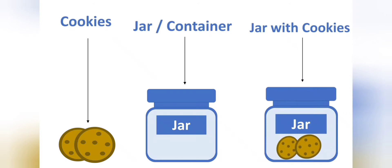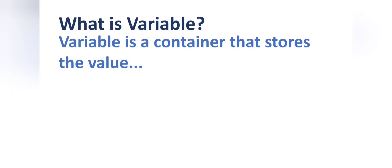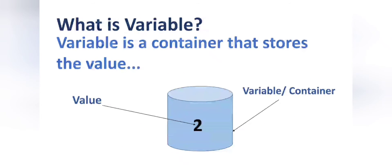Similarly, in Java programming, if we have to store a value or any data, the question arises: where can we store it? We can store a value or any data into a variable. In Java, a variable works as a container to store a value or any data so that we can use that value in our program.